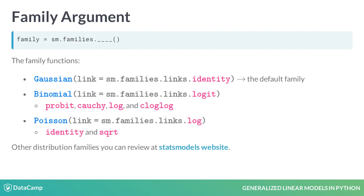Family distributions are in the families namespace. Here we list only three which we will use in this course. The default link function is denoted in parentheses, but you could choose other link functions available for each distribution. However, if you choose to use a non-default link function, you would have to specify it directly.